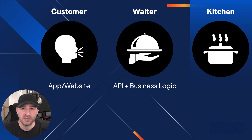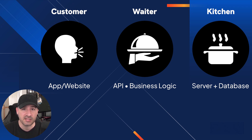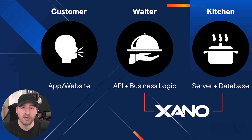The API takes those inputs from the front end and delivers them to the kitchen, where the server and the database are. So Xano, as a no-code development platform, is taking care of both the waiter's and the kitchen's jobs.